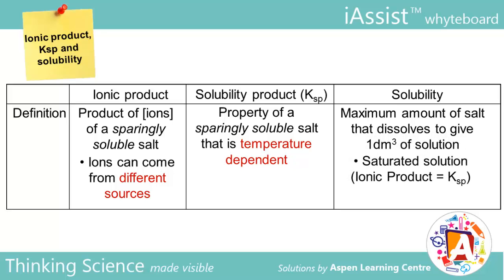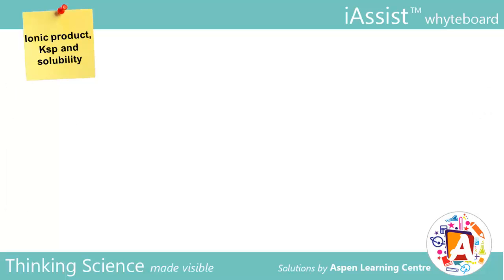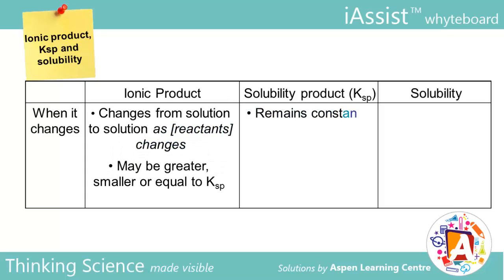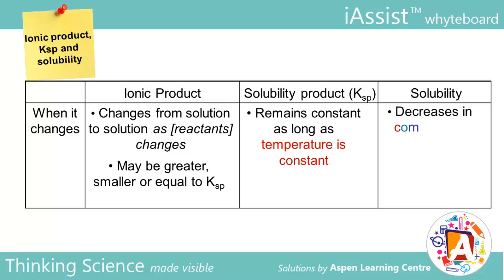A saturated solution is formed where the ionic product equals Ksp. Units of solubility is moles per dm³. Ionic product changes with changing reactant concentrations and may be smaller, equal to, or greater than Ksp. Ksp remains constant at constant temperature. Solubility will decrease in the presence of common ions, but otherwise remains constant.